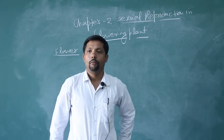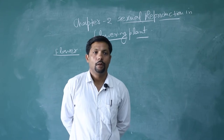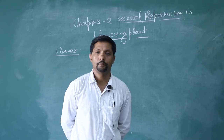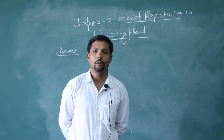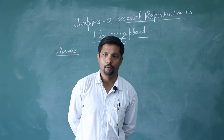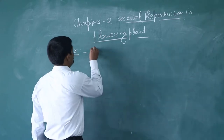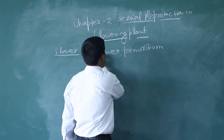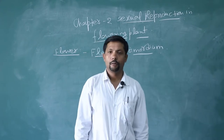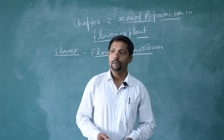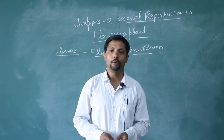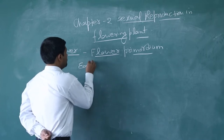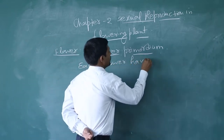Everybody knows that flower is a modified stem. The flower primordium develops into flower buds, and a cluster of flower buds is called inflorescence. These buds finally change into flowers. The flower primordium is the initial stage to develop the flower. The cells of the primordium divide and develop the buds. Each flower has four main parts.